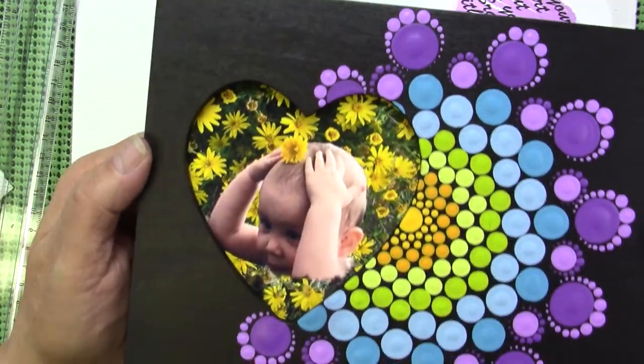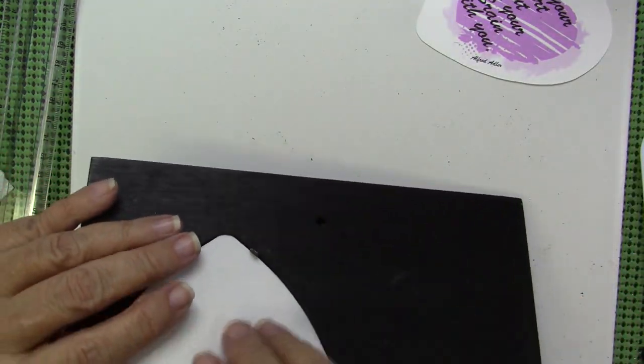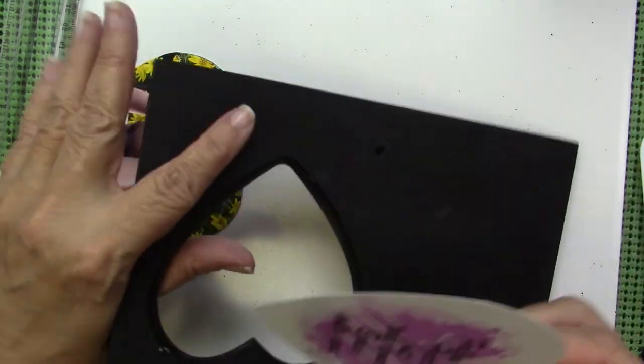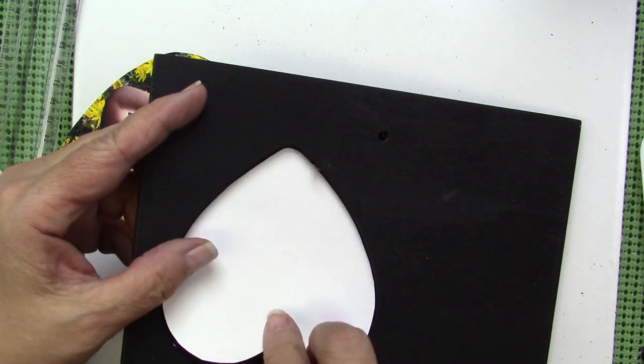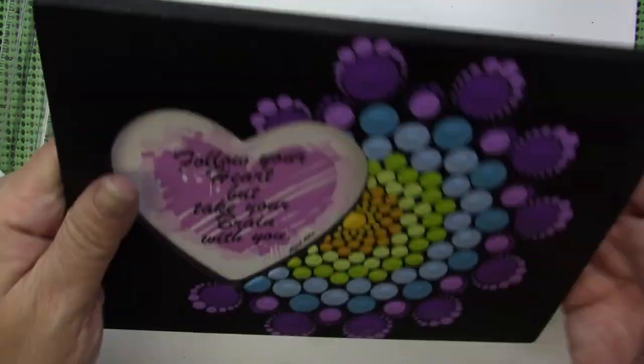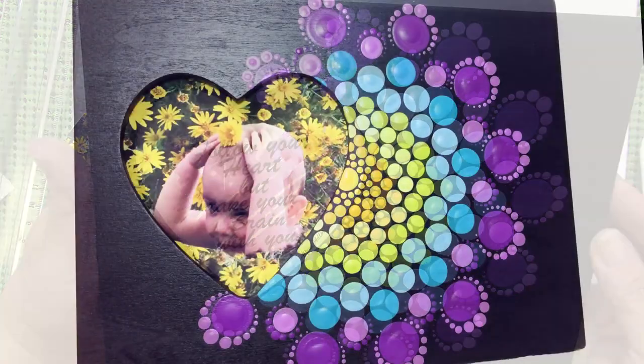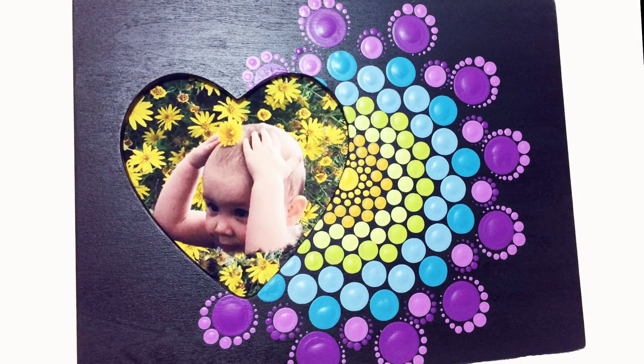And you can see how cute that looks. The colors match nicely there. And then again, if you don't want to use a photo, you can use a little saying or some kind of little graphic element that you have. I have this little heart element that I thought was really cute and the colors match nicely. So here are the finished pieces. There's the one with the picture and here's one with just the graphic element.